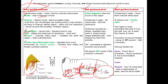Malpighian tubules are major organs of excretion which help in excretion of nitrogenous waste material from the insect body and help in maintaining osmoregulation. The hindgut is again divided into three parts: ileum, colon, and rectum.